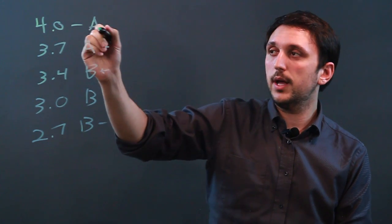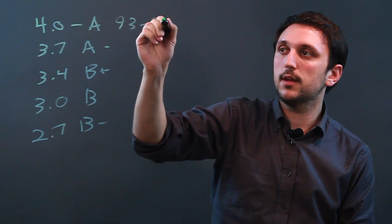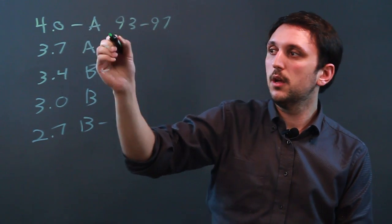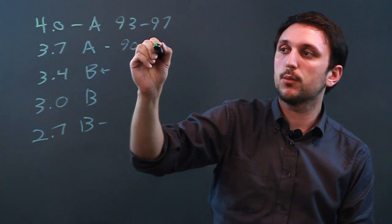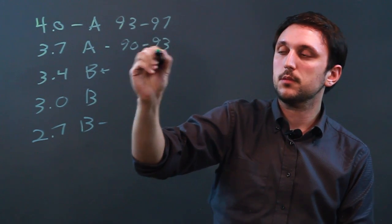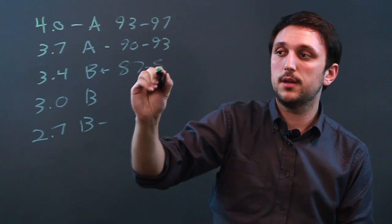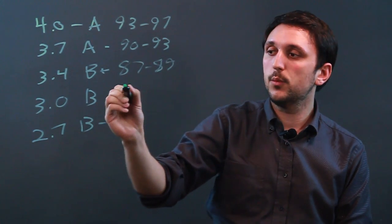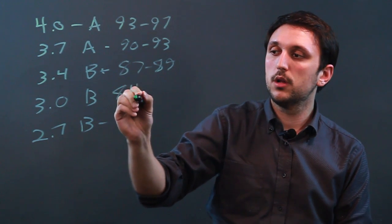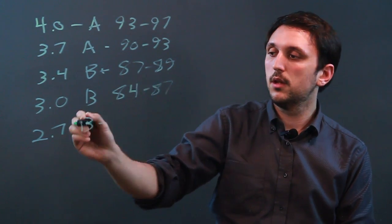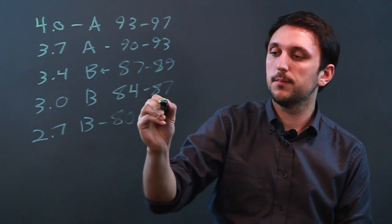A 4.0 A would be 93 to 97, a 3.7 A- would be 90 to 93. A B+ would be 87 to 89. A B would be 84 to 87. A B- would be 80 to 83.